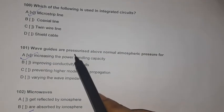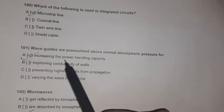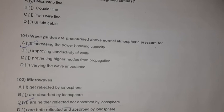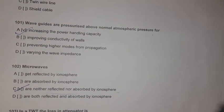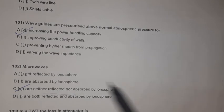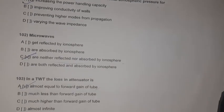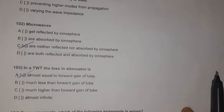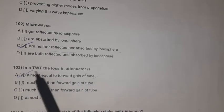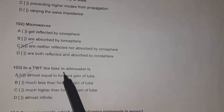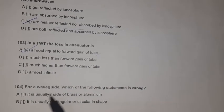Question 99: Waveguides are pressurized above normal atmospheric pressure for increasing the power handling capacity. Question 100: Microwaves are neither reflected nor absorbed by the ionosphere. Question 101: In a TWT, the loss in the attenuator is almost equal to the forward gain of the tube.